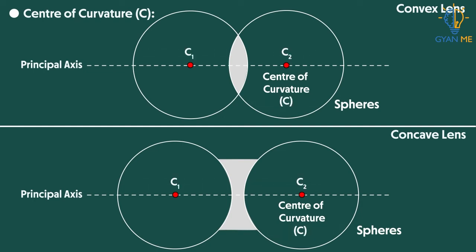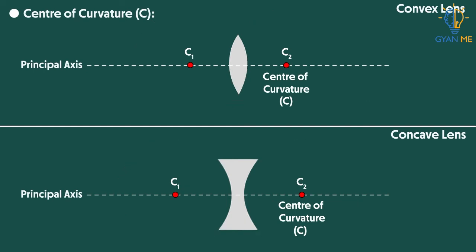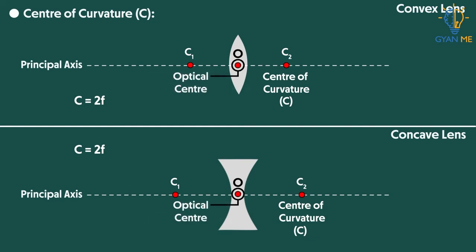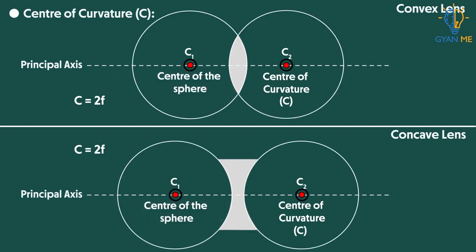But wait, for lenses, we denote C as 2F. That is two times the focal length. Well, why? We will see it soon. Clearly, remember that the center of the lens is the optical center. But the center of curvature is the center of the sphere from which the lens is made.